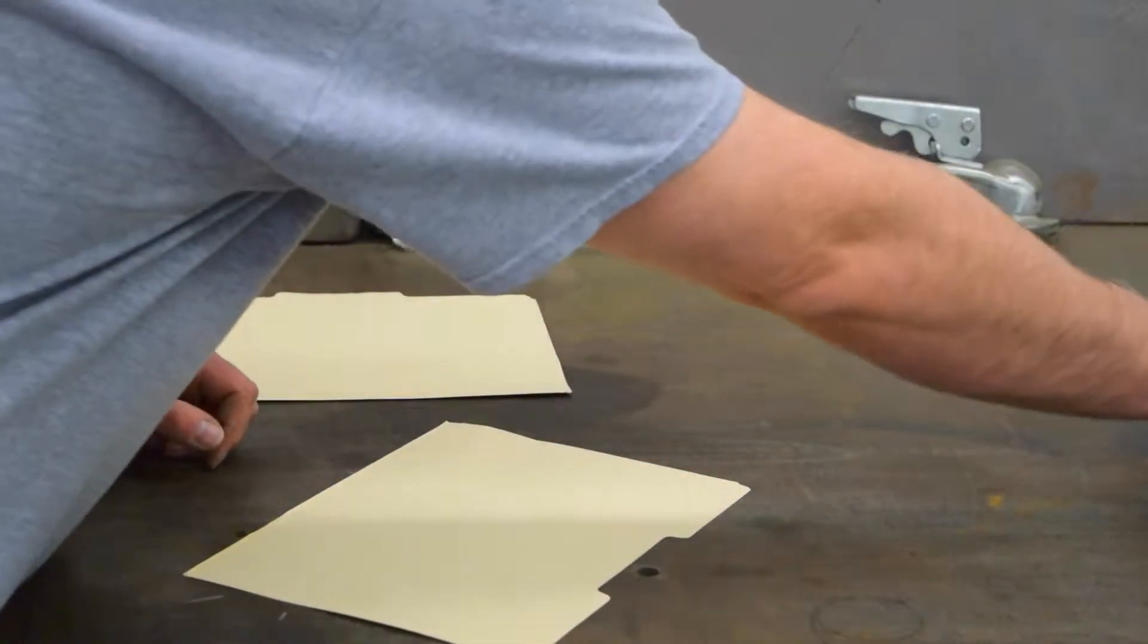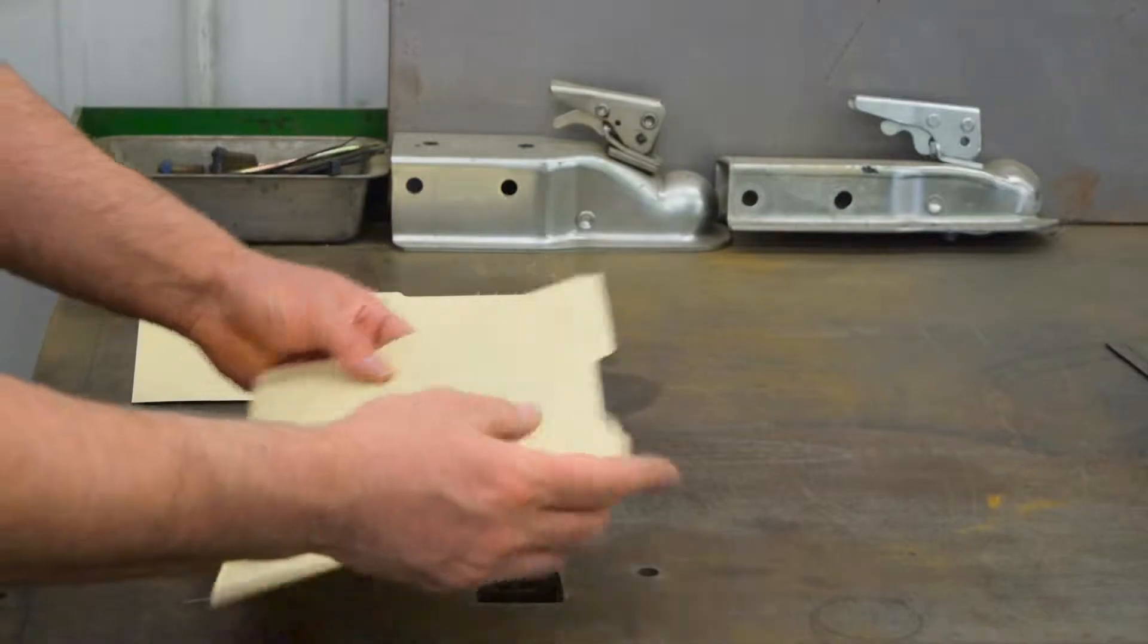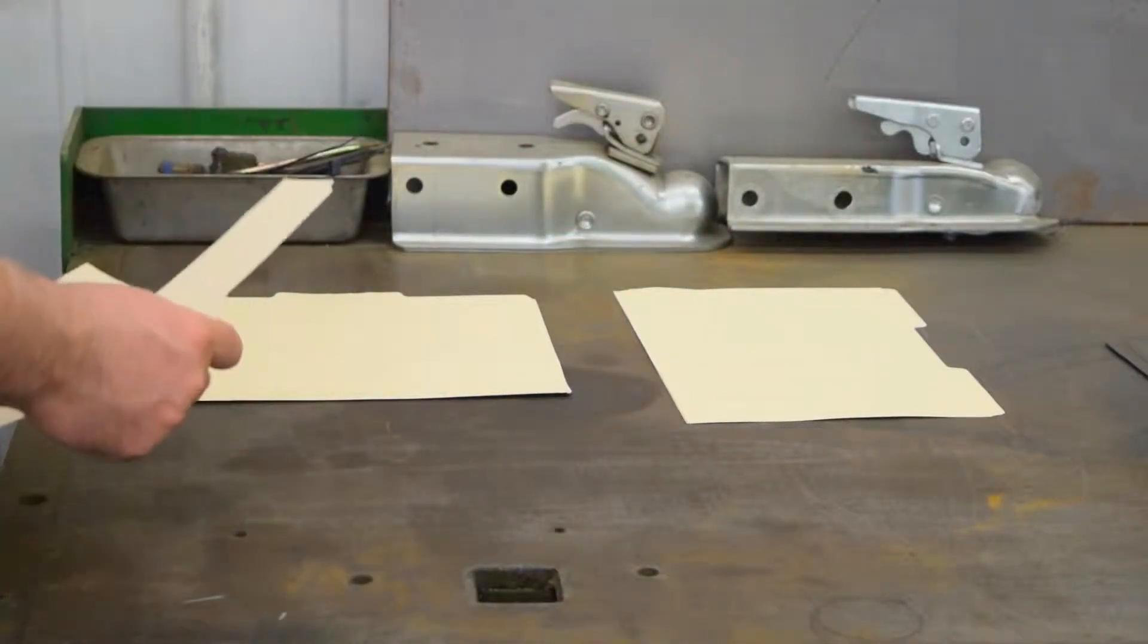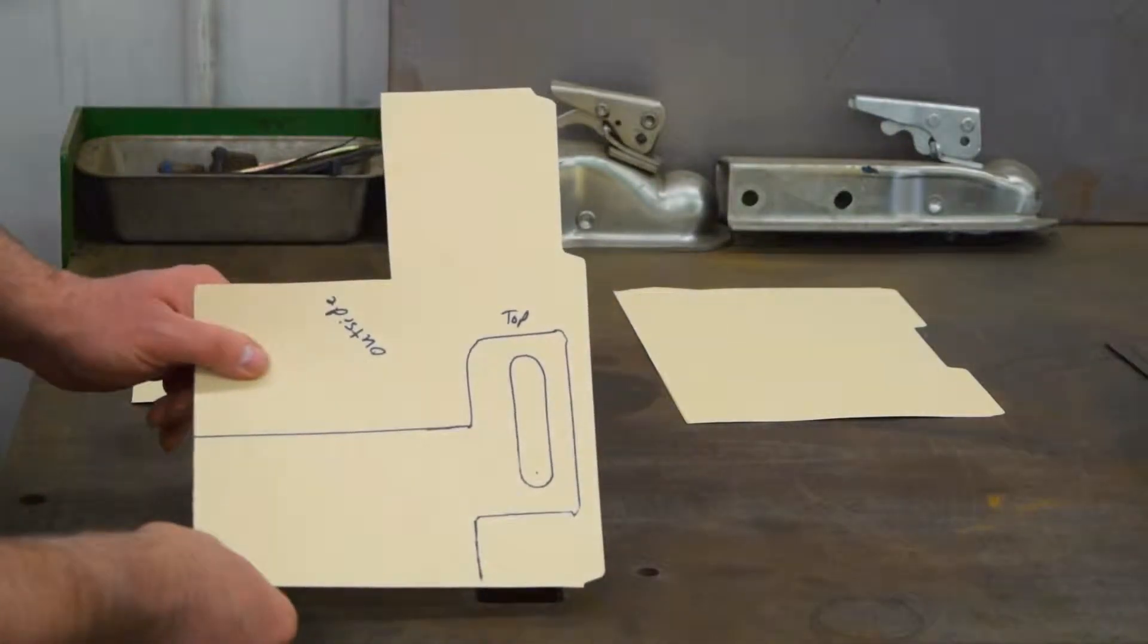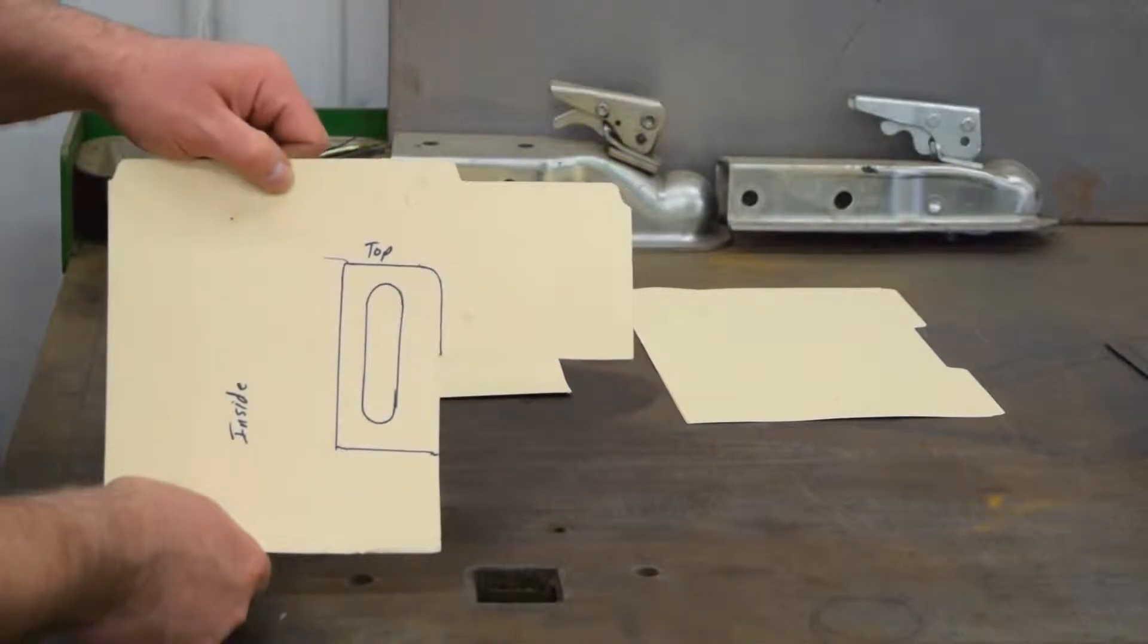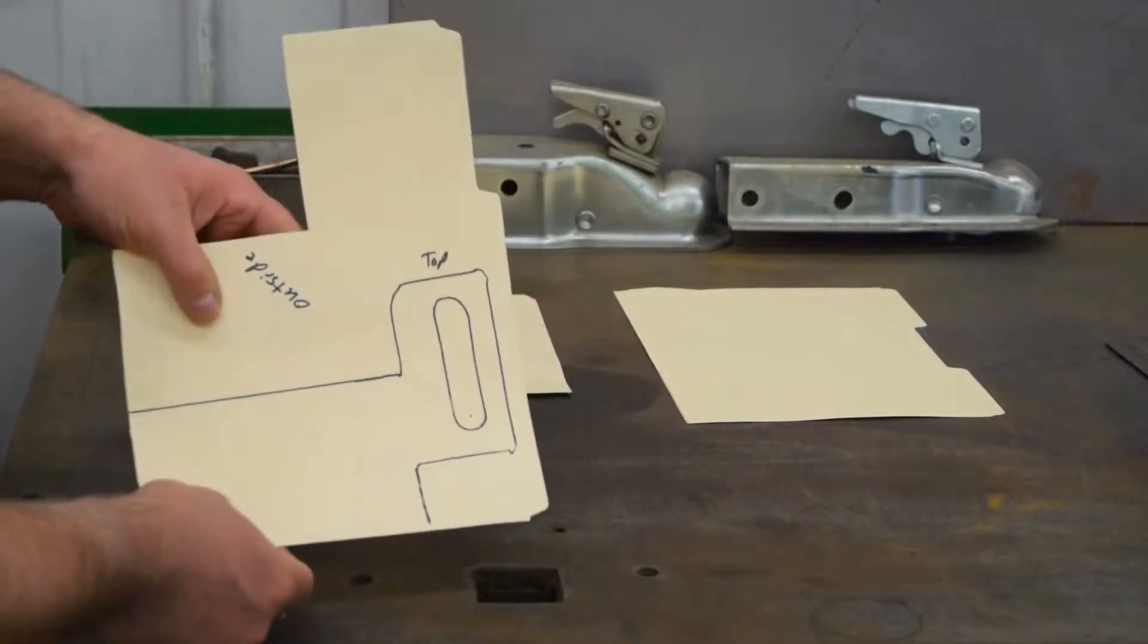So now that we've already taken care of some of the different pieces here, this is a template I made of the back of the trailer, both the inside and the outside of it, which is the area that we're going to have to work with.